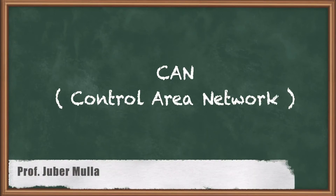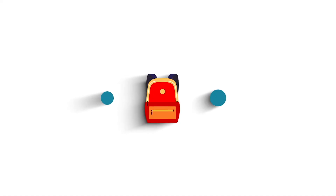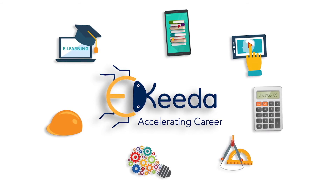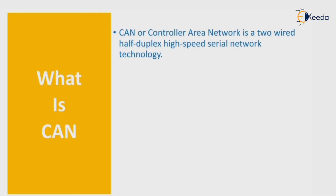Hello everyone, today we learn CAN — that is Controller Area Network — what is CAN, working of CAN, and CAN frame format. CAN or Controller Area Network is a two-wire, half-duplex, high-speed serial network technology.